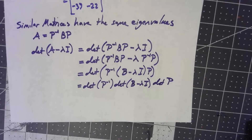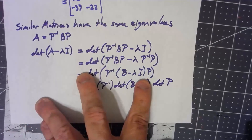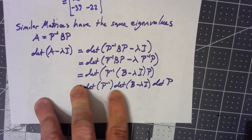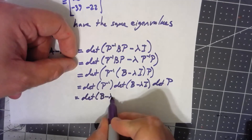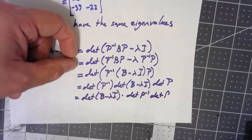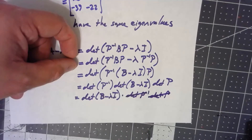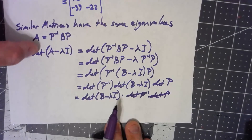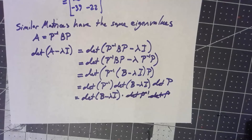When we're talking about just numbers — and determinants are just numbers — multiplication is commutative. So this equals the determinant of (B minus lambda I) times the determinant of P inverse times the determinant of P. Since determinants of inverse matrices are reciprocals of each other, those multiply to one. Therefore the determinant of (A minus lambda I) equals the determinant of (B minus lambda I): they have the same characteristic polynomial and the same eigenvalues.